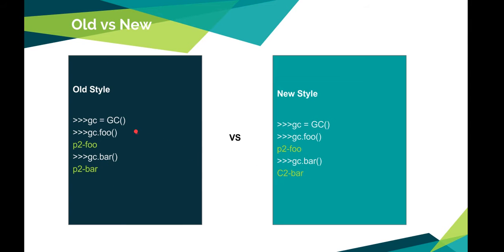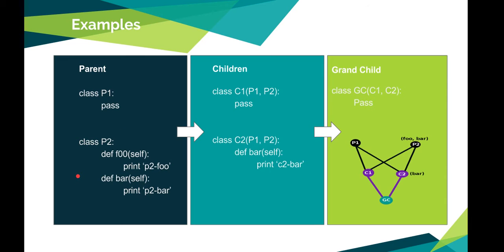In old style classes, if you instantiate GC and type foo, it will directly print P2 foo. If you execute bar, it will directly print P2 bar. Let me show you. When you type foo here, it will look for foo in GC, not found. Then it will go to C1, not find it. Then it will go to P1, not find it. Then it will go to P2, find that and execute it.